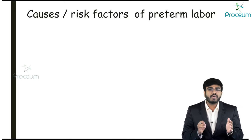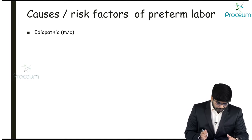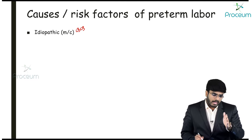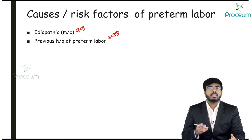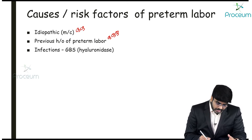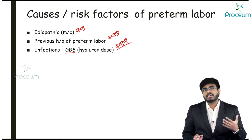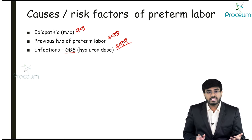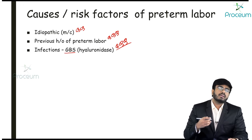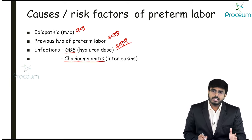Let's look at the causes and risk factors for preterm labor. The most common cause is idiopathic. Other important risk factors include a previous history of preterm labor. Infections with Group B Streptococcus (GBS) increase hyaluronidase levels, which increase uterine contractions, leading to preterm labor. Infections causing chorioamnionitis can also lead to preterm labor.